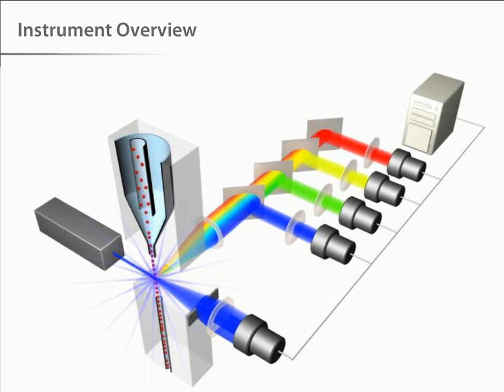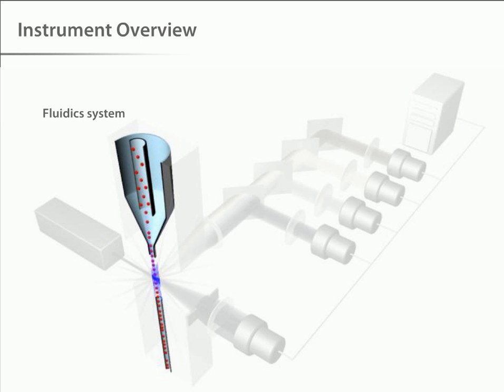This view shows the primary systems of the flow cytometer schematically. These are the fluidic system, which presents samples to the interrogation point and takes away the waste,